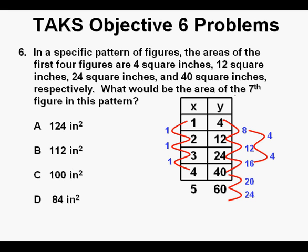In the next figure, we would expect it to go up by another 4. So that would be 20 plus 4 equals 24. So for figure number 6, we would have 60 plus 24, which is 84. And for the next figure, we would expect another increase by 4. And 24 plus 4 is 28. And so for our 7th figure, we have 84 plus 28, which equals 112. And where do we find the output value of 112? We find it here in answer B, 112 square inches. So we circle answer B.